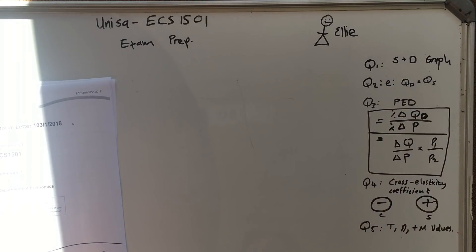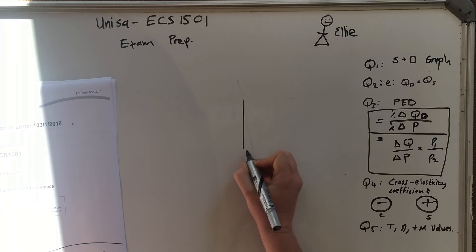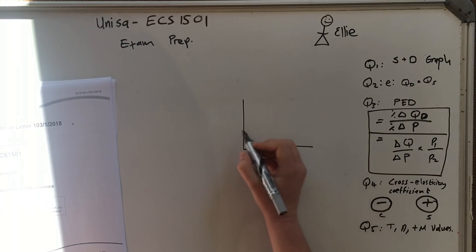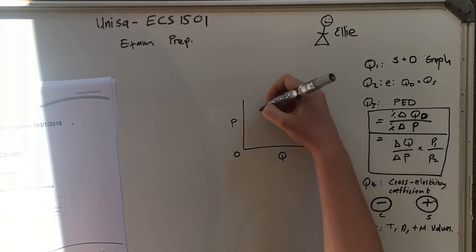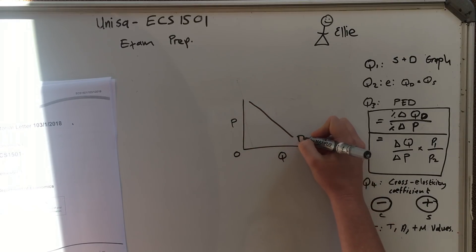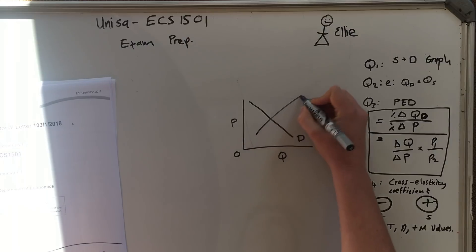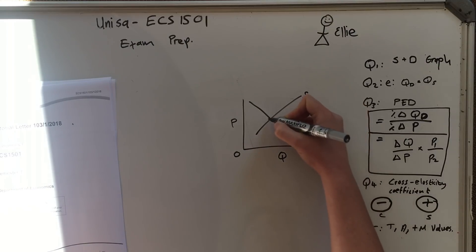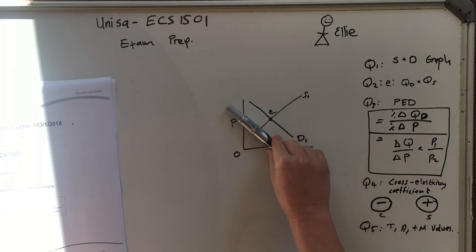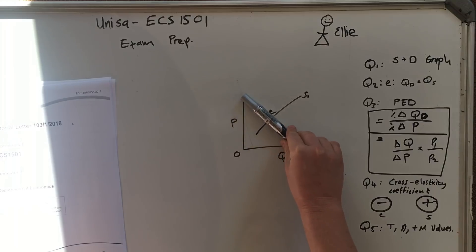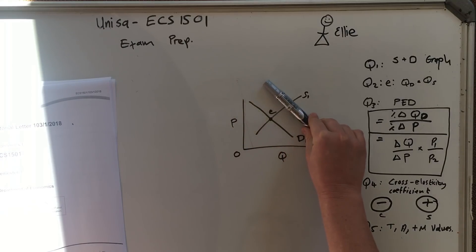First up, question one: they're going to ask you to draw a supply and demand curve. We have been through this — you just have to do your own one. Remember to put in price and quantity, remember to put a zero, remember that demand always slopes downward and supply always slopes upward. Put ones in and make an E — you already get marks for that.